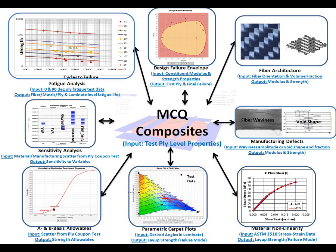In the middle right you have manufacturing defects — fiber waviness and void shapes. In the lower center, you see an example of the parametric carpet plot. On the lower left side, you see an example of predictions for A and B basis strength allowables.